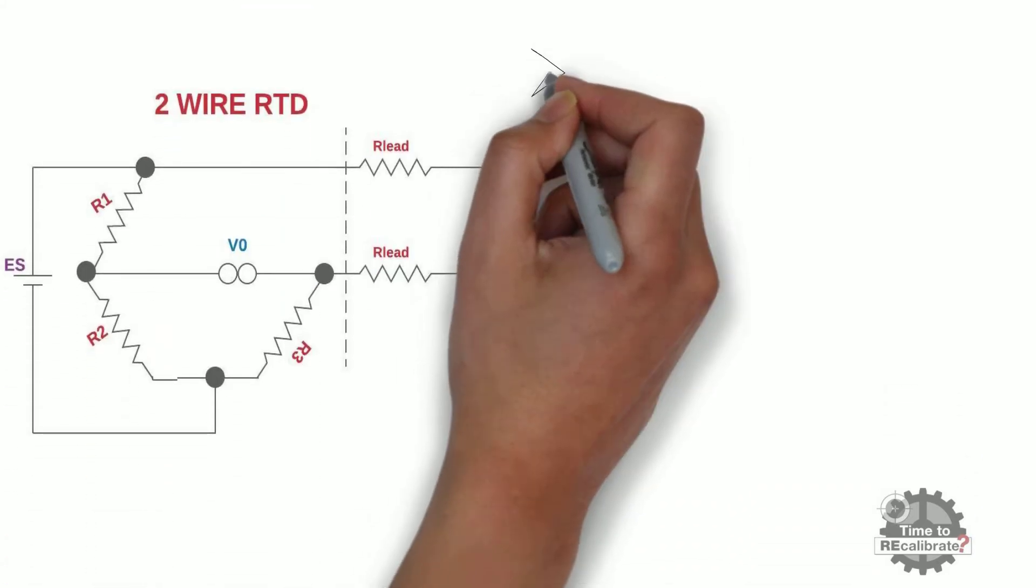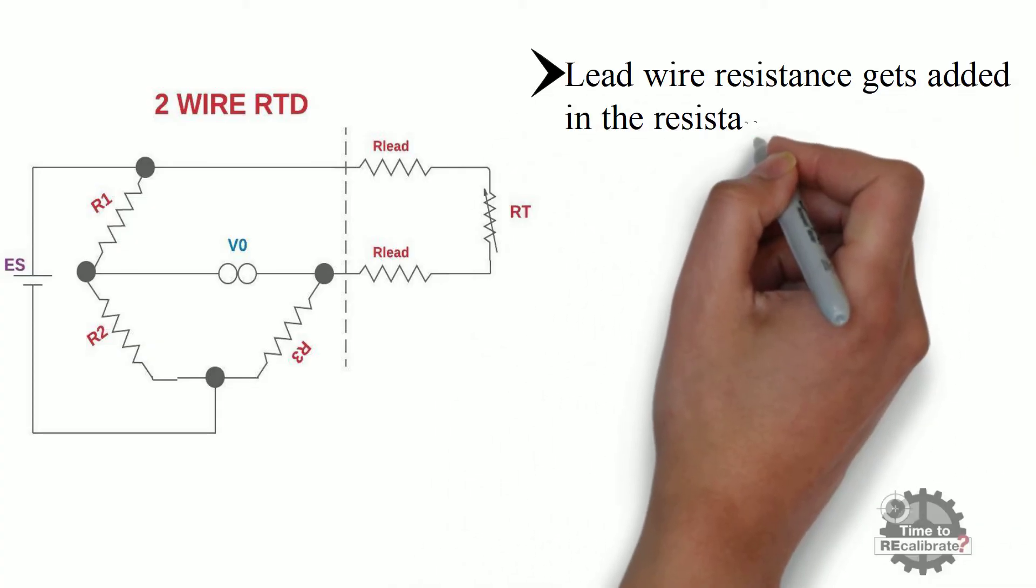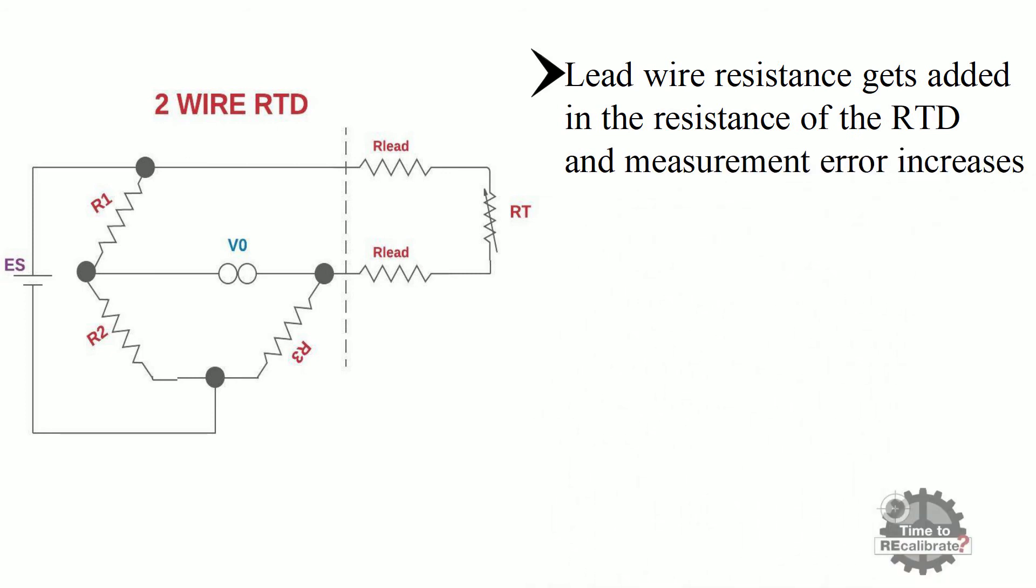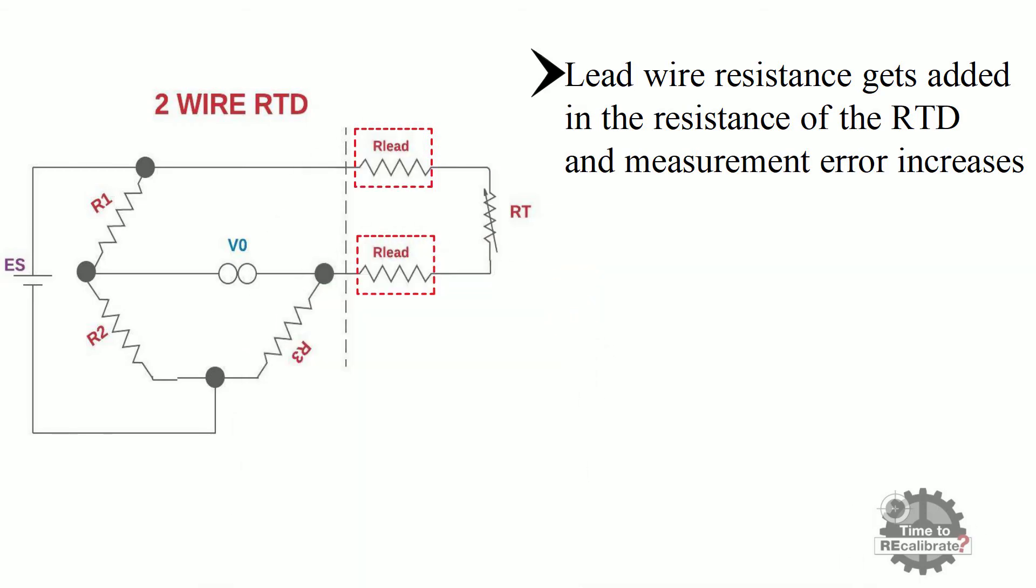As you can see from the circuit diagram of 2-wire RTD, lead wire resistance gets added to the resistance of the RTD, and because of lead wire, the measurement error also increases. The measurement error increases with increase of distance between the temperature transmitter and the RTD position. In this circuit diagram, R1, R2, and R3 are Wheatstone bridge resistors. R lead is the resistance of those particular lead wires, and RT is the resistance of the RTD.